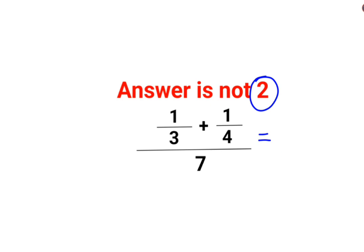When you have something like this, it is very important to realize that addition of fractions, people made the mistake of 1 plus 1 is 2, denominator 3 plus 4 is 7 upon 7. So this and this gets cancelled, you are left with just 2.